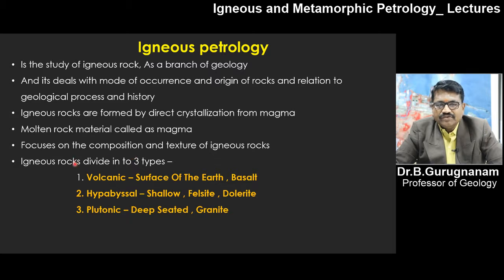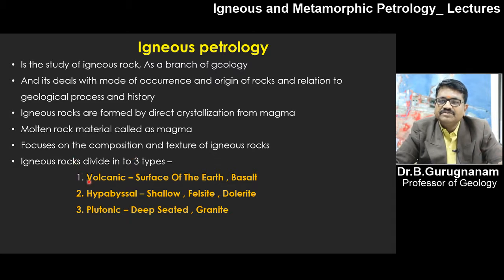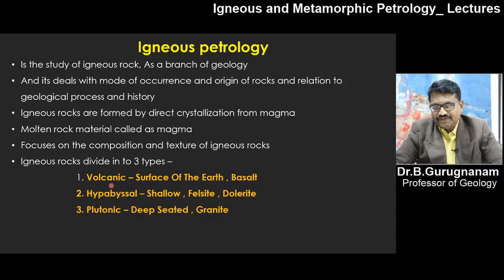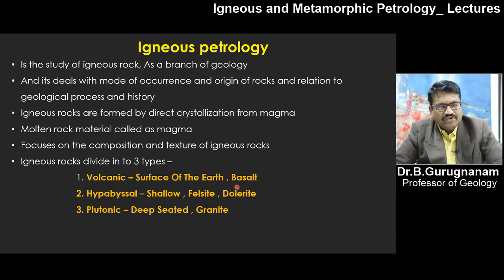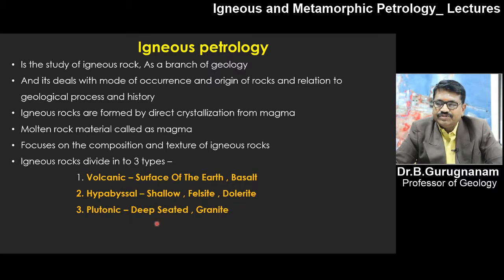These rocks are divided into three different types based on the depth at which they form: volcanic (surface), near surface (shallow), and deep abyssal or plutonic (deep). Based on where they form — at the surface, basalt is the composition of volcanic rock; at shallow depth, felsite or dolerite is typical; and deep-seated, granite is the composition.